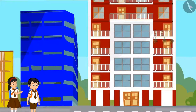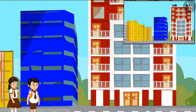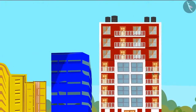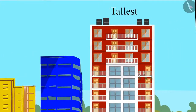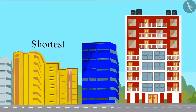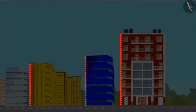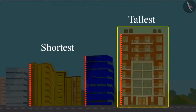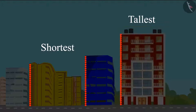Hey Chotu, just look — this glass building is taller than these two! Yes Pinky, that glass building is the tallest among all these buildings. So this means that the yellow house is the shortest of the three. So children, the yellow house is the shortest and the glass house is the tallest of all three houses.